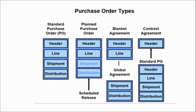In Oracle EBS, we generally have four kinds of purchase orders. The first is the standard purchase order, the second is the planned purchase order, the third is the blanket purchase agreement, and the fourth is the contract purchase agreement.